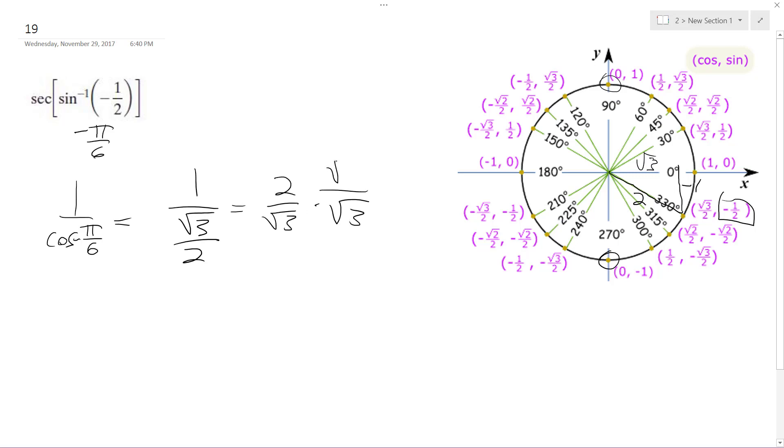And then we can rationalize the denominator. So we end up with two root three over three for the secant of the inverse sine of negative one-half.